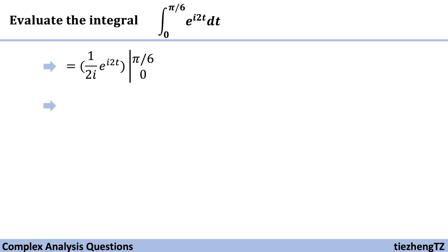And the next step, we just need to substitute, which becomes (1/2i)e^(iπ/3) minus 1/2i, because e^0 is 1.